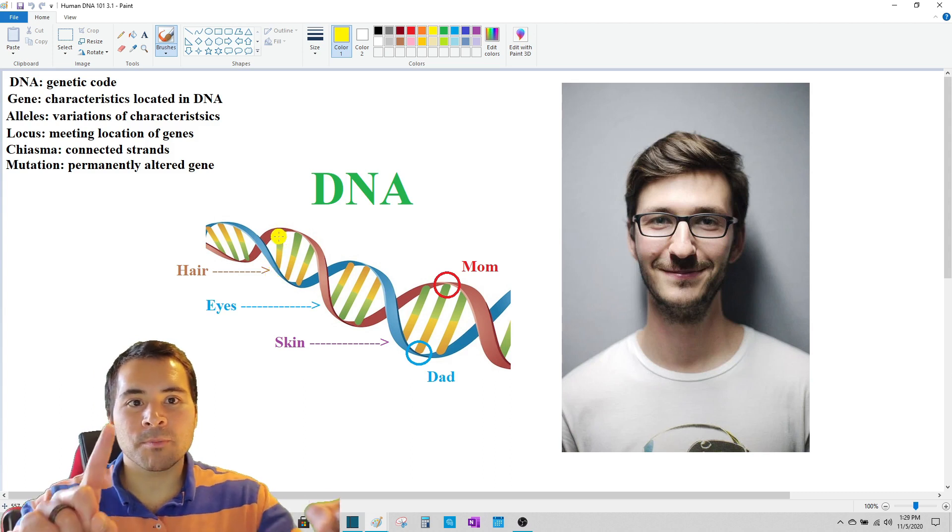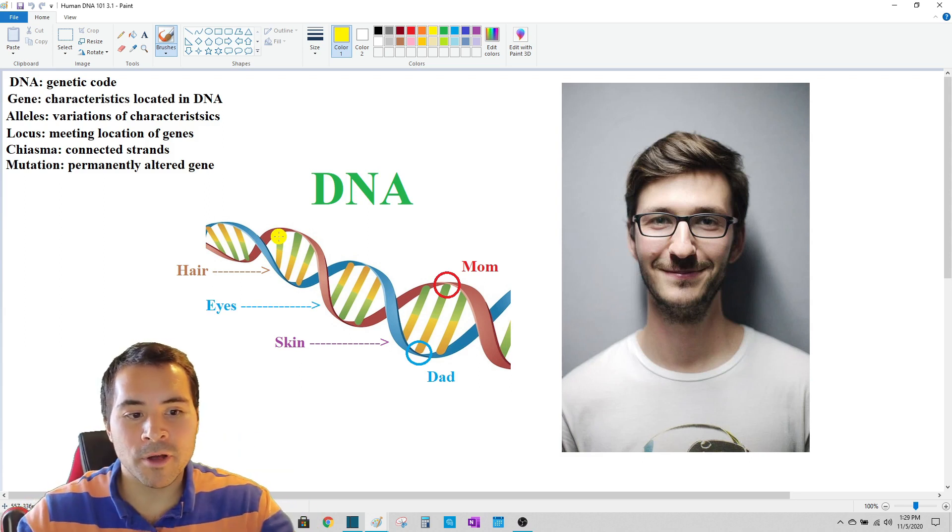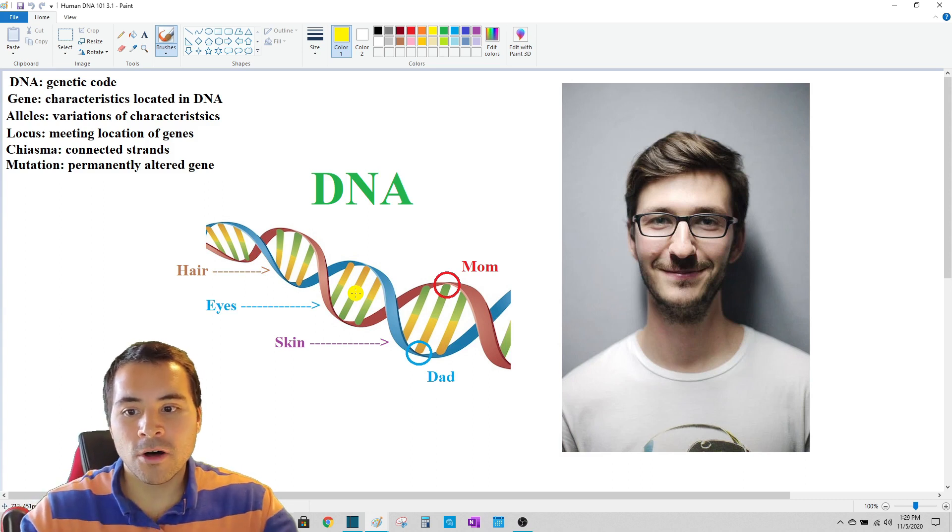And when the sperm and the egg meet, that DNA is fused together at that exact locus point to create your unique expression of hair color or eye color or skin color. That connection, that fusing of the genes actually has a name. It is called chiasma. Chiasma are the connected strands, the fused strands of DNA between your dad and your mom. It's these ladder rungs right here.